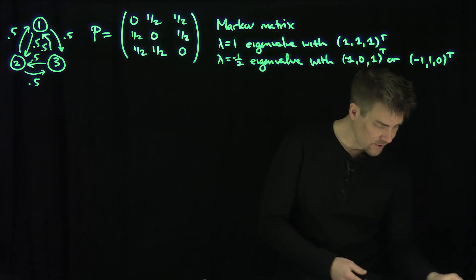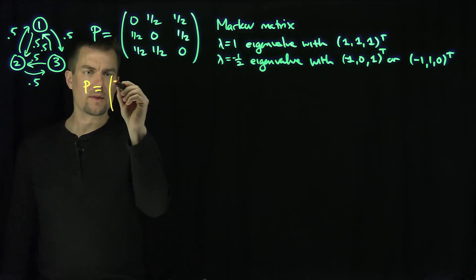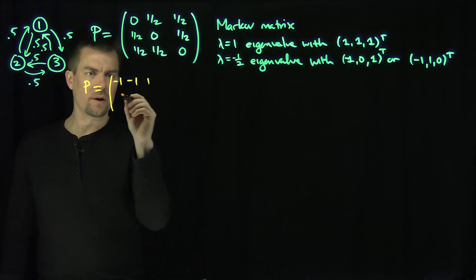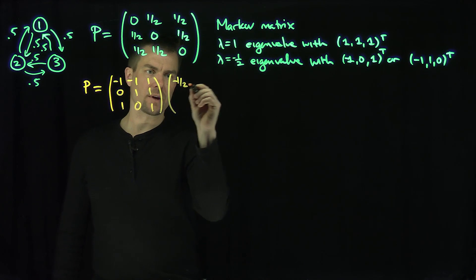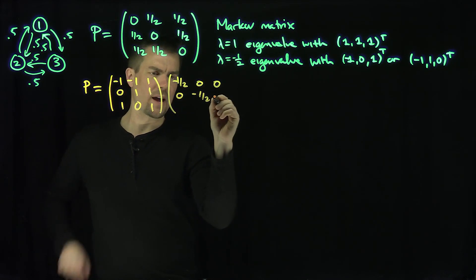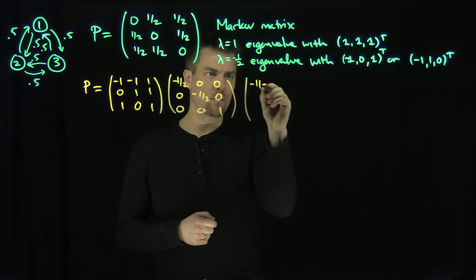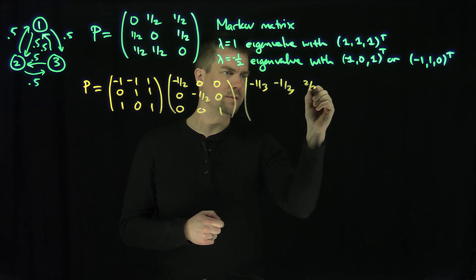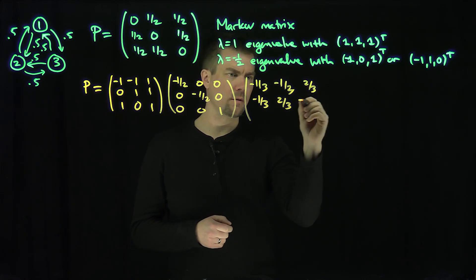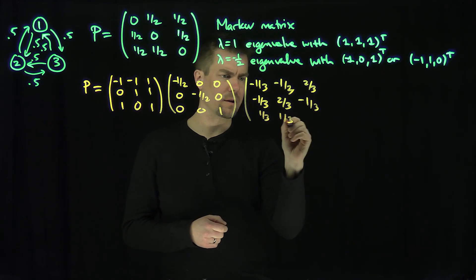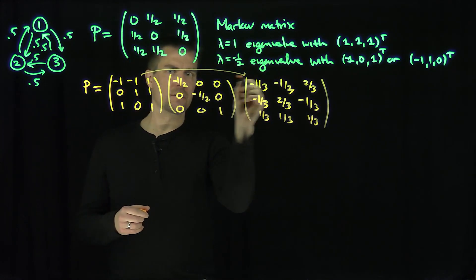So now I can diagonalize my Markov matrix — that's how we find the long-term states. So P equals the eigenvector matrix [[-1, -1, 1], [0, 1, 1], [1, 0, 1]] times the diagonal matrix with eigenvalues [-1/2, -1/2, 1], times the inverse matrix [[-1/3, -1/3, 2/3], [-1/3, 2/3, -1/3], [1/3, 1/3, 1/3]]. Notice these two outer matrices are inverses of each other — you can check that.